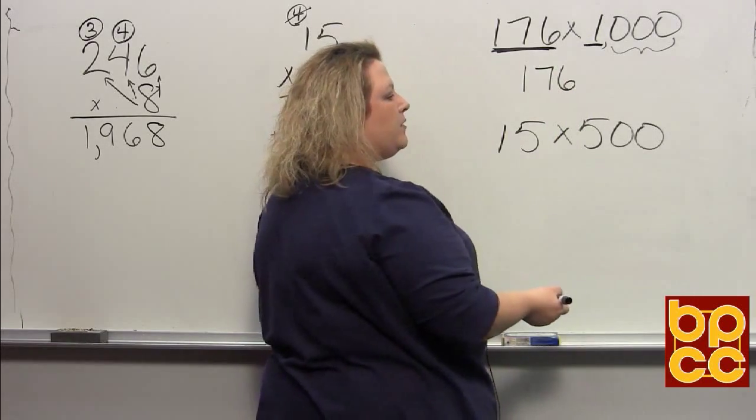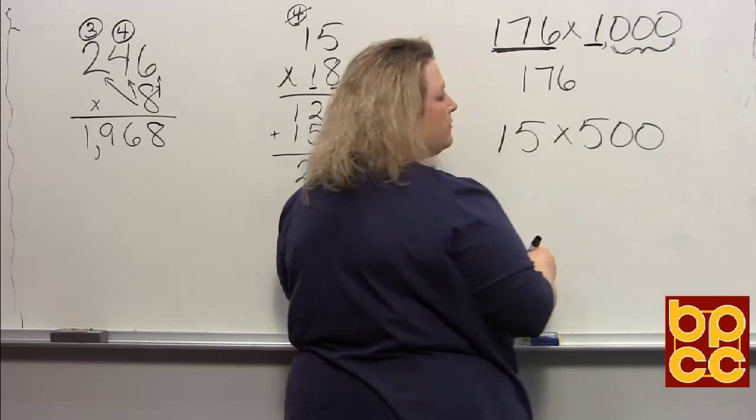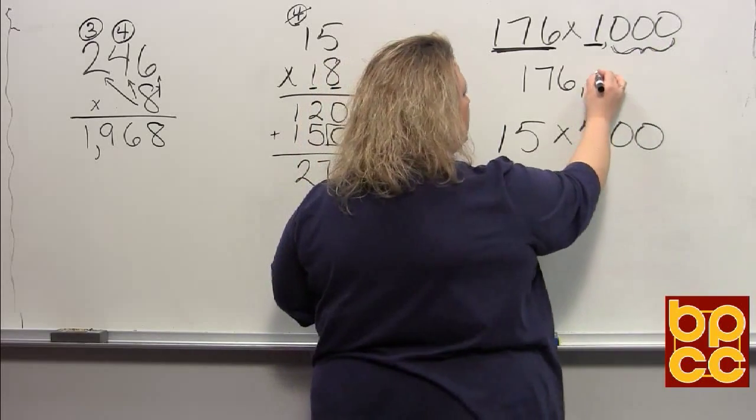But we also have the three zeros. So since those three zeros represent a thousand, we're going to place one, two, three zeros and get us an answer of 176 thousand.